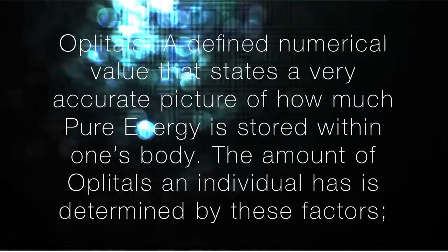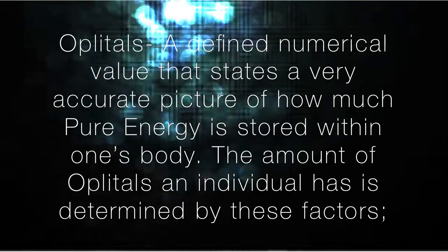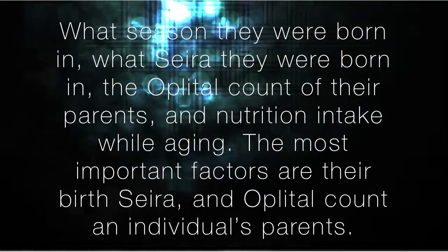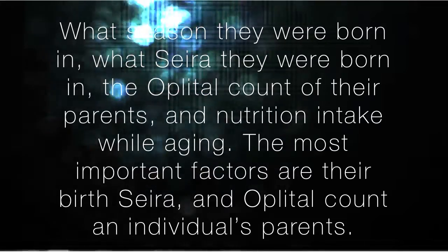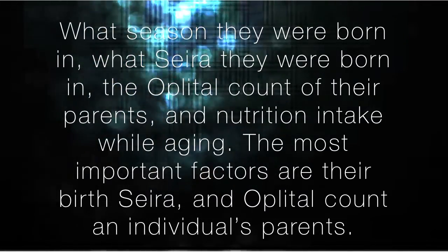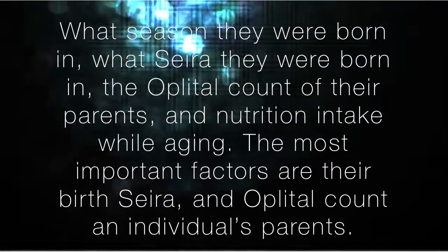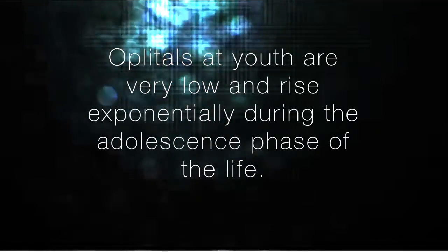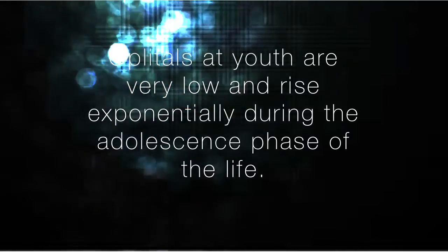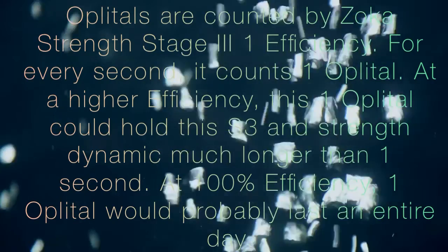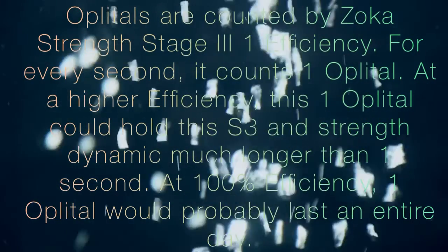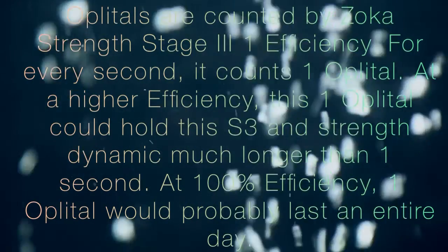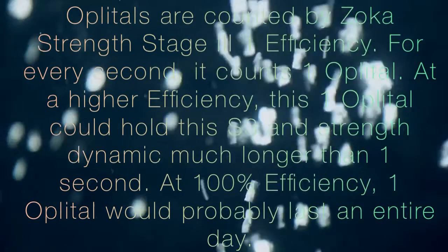Oplotals are a defined numerical value that states a very accurate picture of how much pure energy is stored within one's body. The amount of oplotals an individual has is determined by: what season they were born in, what sara they were born in, the oplotal count of their parents, and nutrition intake while aging. The most important factors are their birth sara and oplotal count of their parents. Oplotals at youth are very low and rise exponentially during the adolescence phase. Oplotals are counted by zoka strength stage three efficiency — one for every second it counts one oplotal.